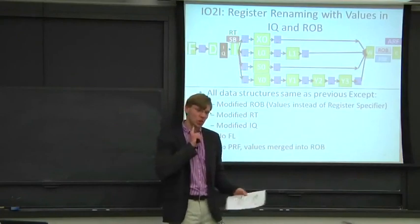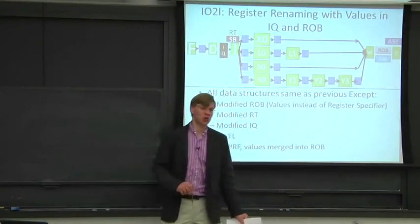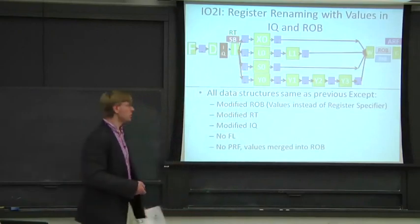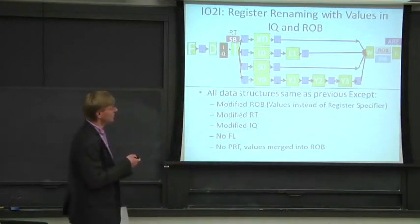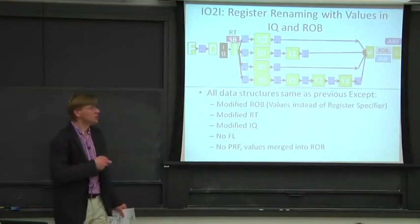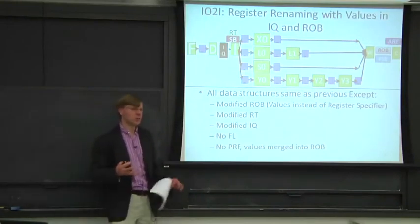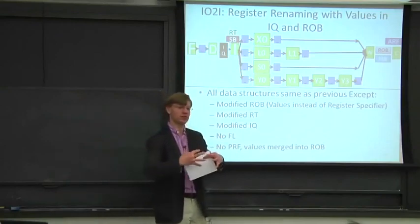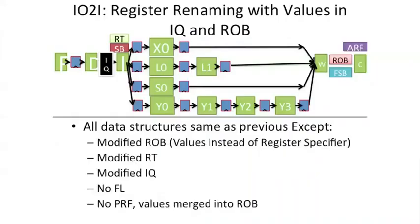The reservation station, or what we're calling instruction queue, and the reorder buffer. A couple things change when you do this. One structure is missing: there is no physical register file — we removed that. We're going to store in-flight instructions in a merged reorder buffer physical register file effectively. The second thing that's changed is we no longer have a free list. Instead, we're basically just going to use different reorder buffer entries to keep track of our free list.